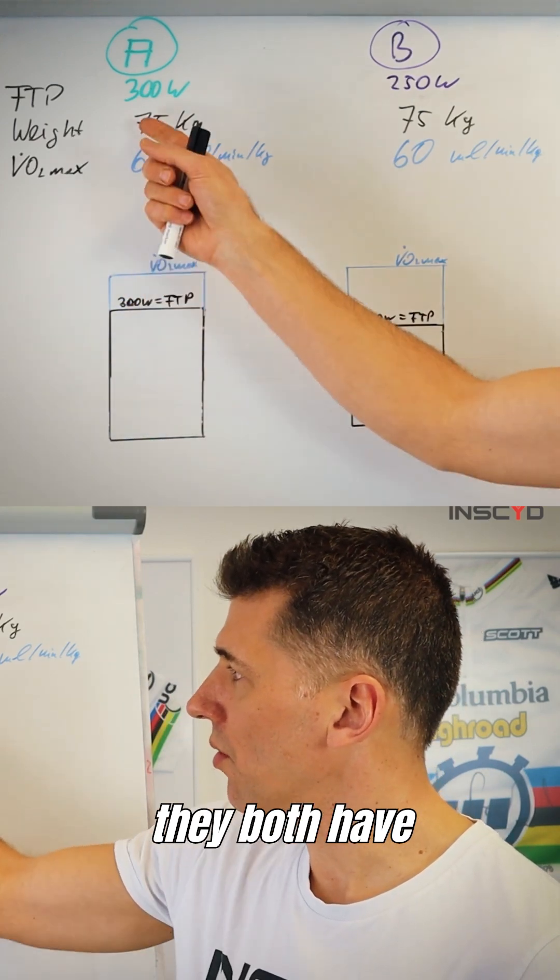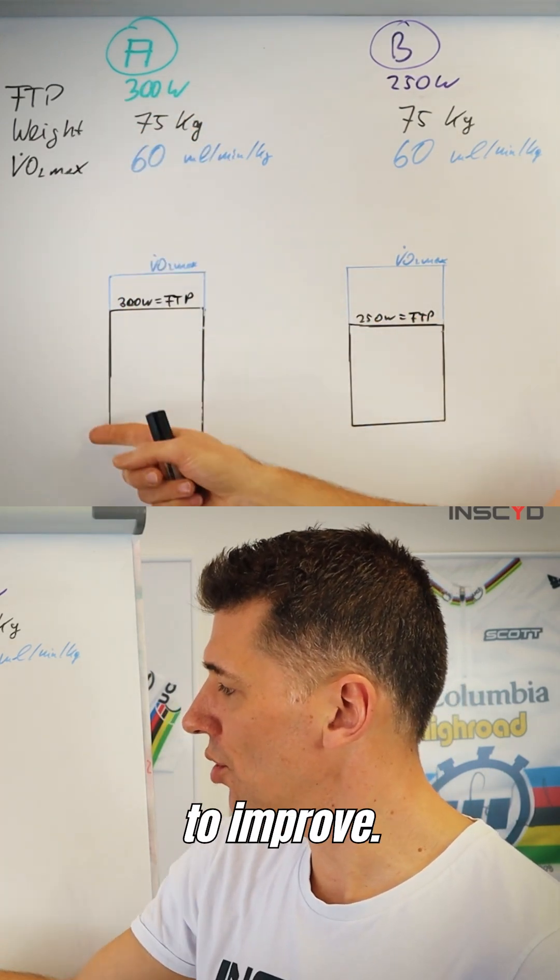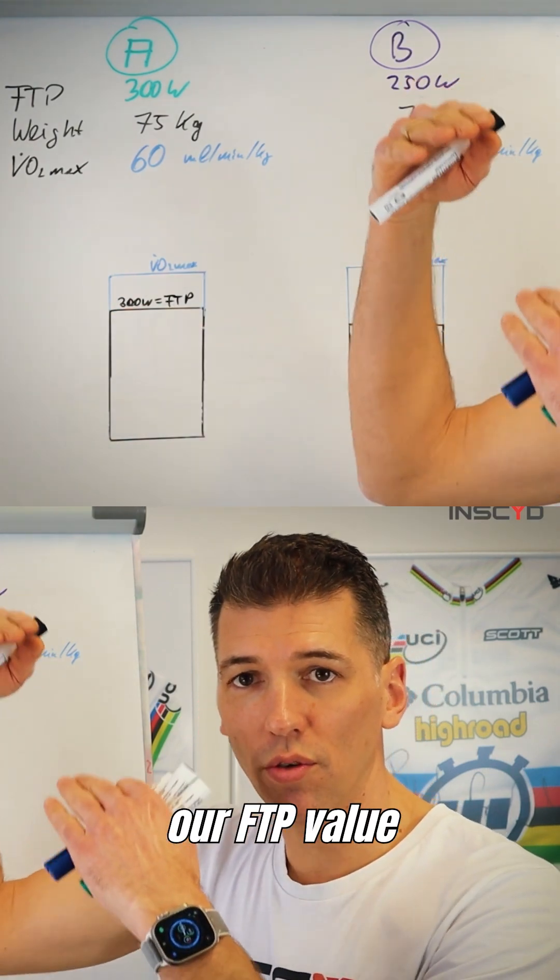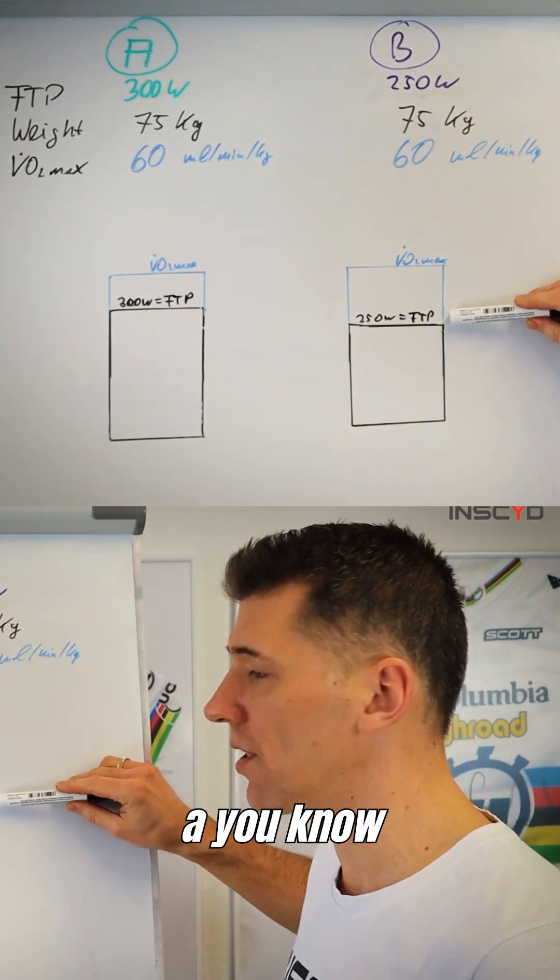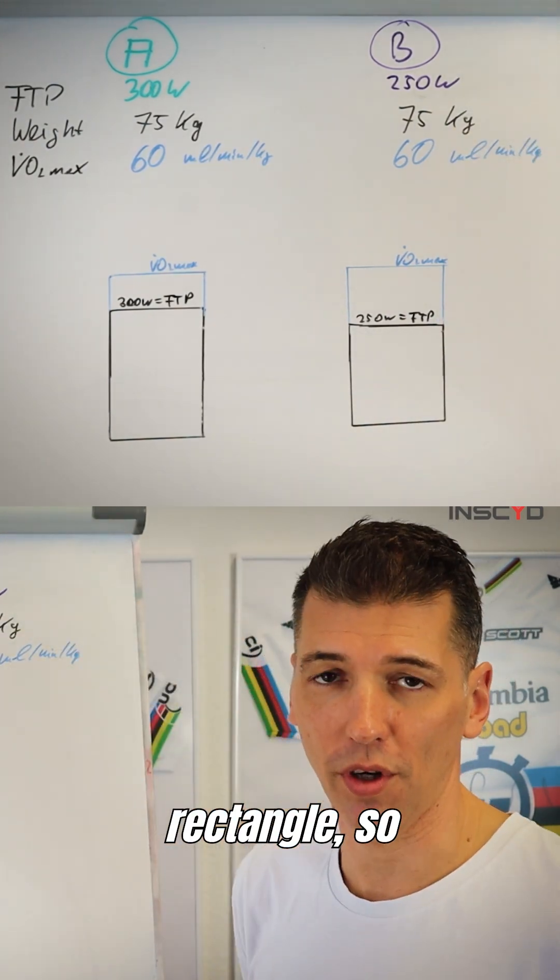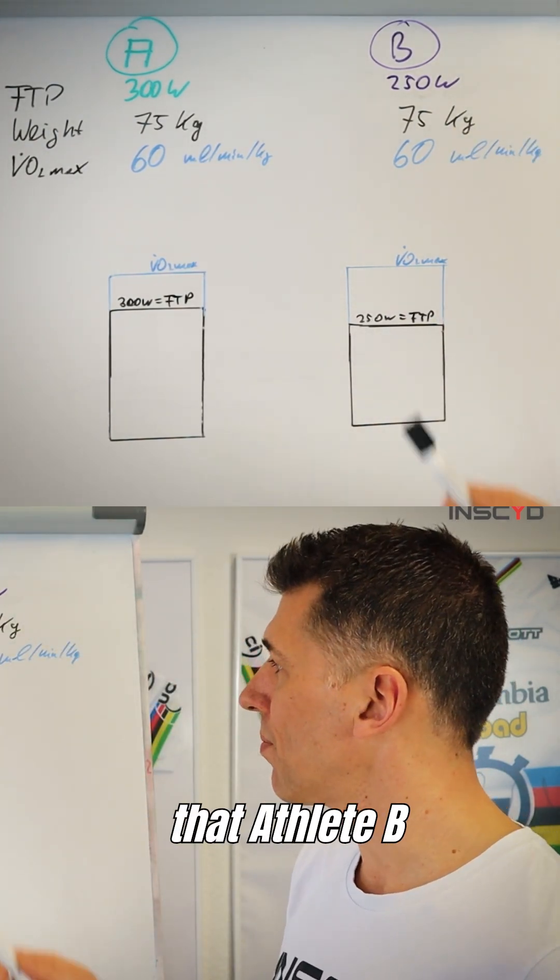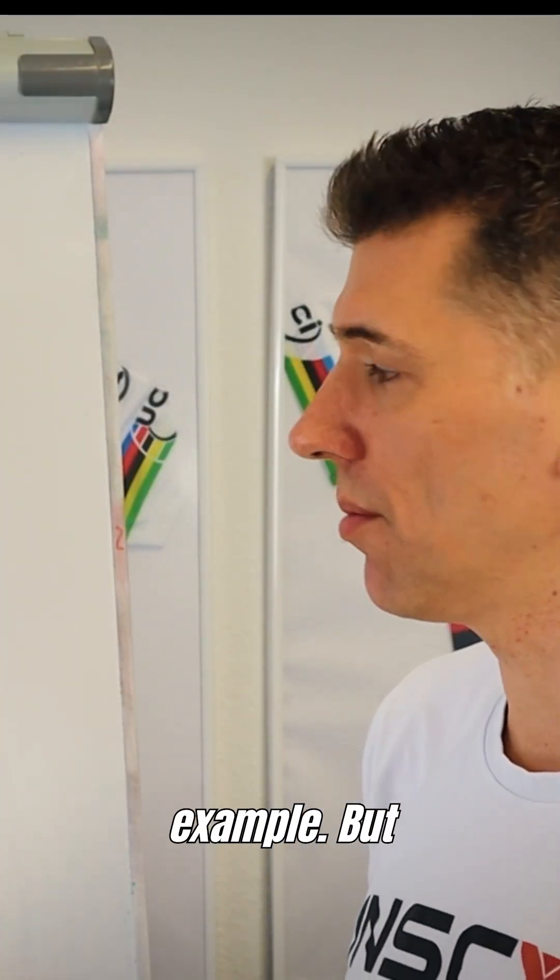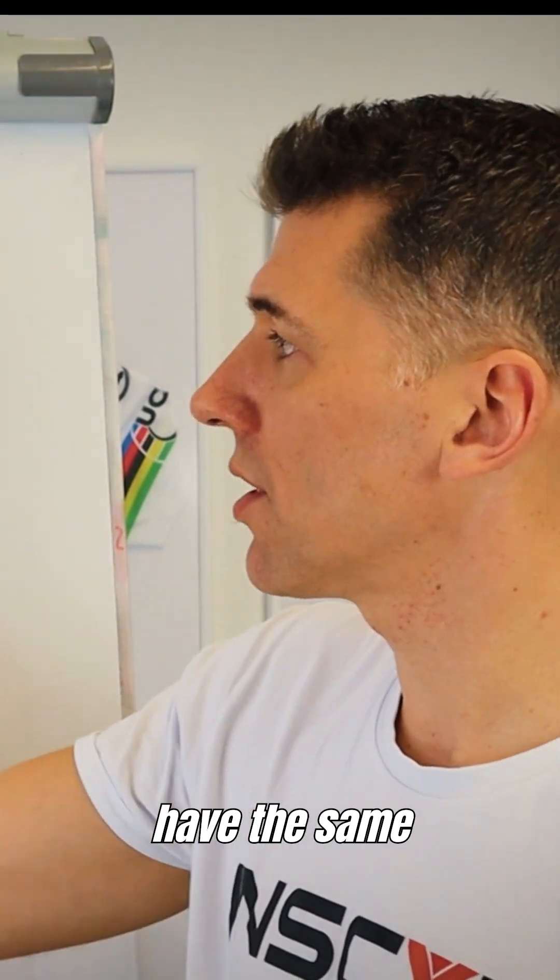And now let's assume they both have the same VO2max, which they're trying to improve. Now if you look at our FTP value shown here as a black rectangle, it shows how much power there is. You can see athlete B's FTP is obviously lower because he only has an FTP of 250 watts in our example.